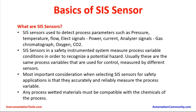What are SIS sensors? SIS sensors are used to detect process parameters such as pressure, temperature, flow, and electrical signals such as power, current, and analyzer signals from gas chromatographs, oxygen and CO2 analyzers.